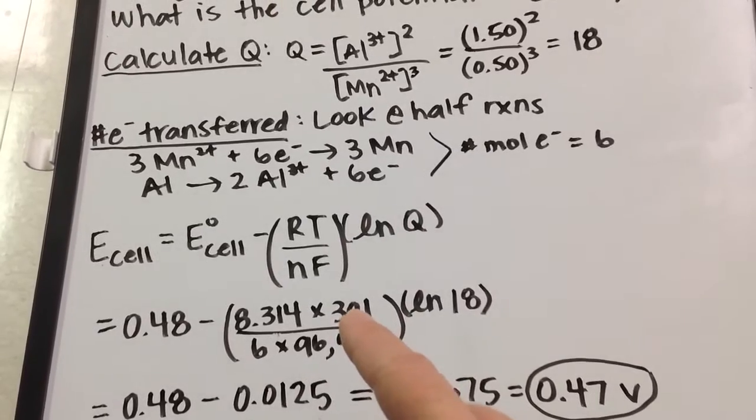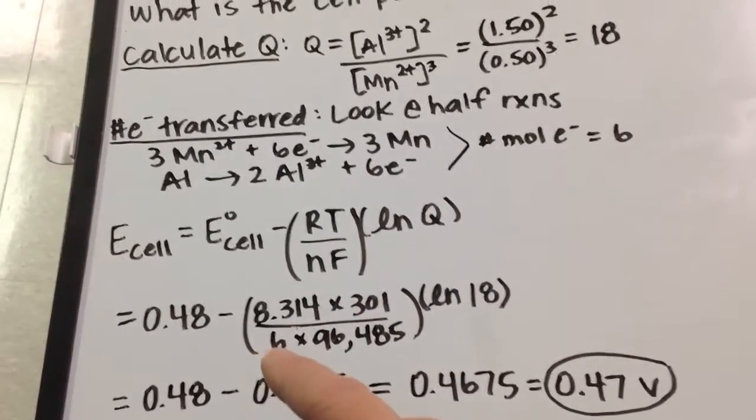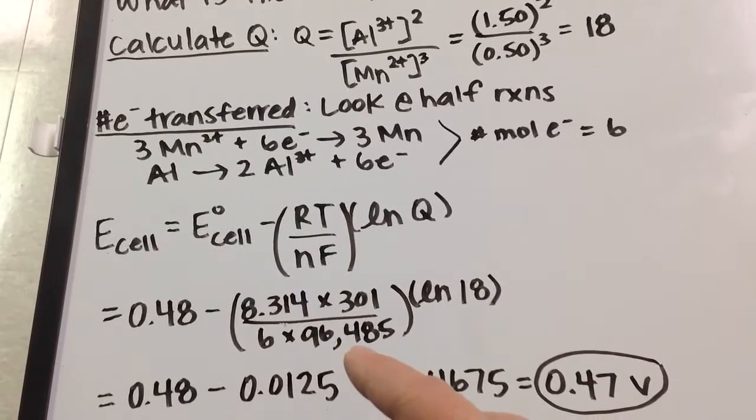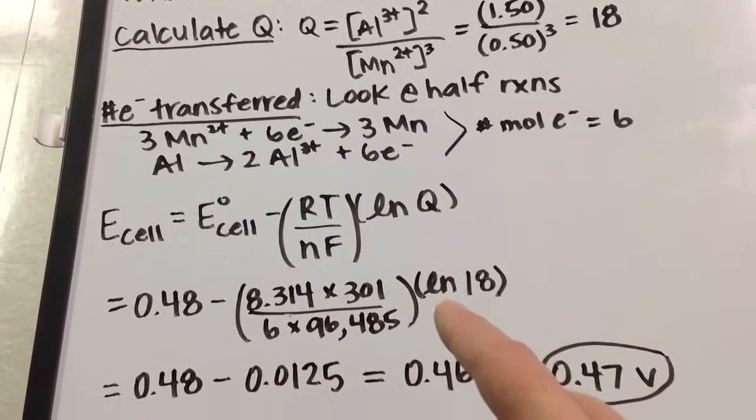so I take my Celsius temperature and add 273. 6 is the number of moles transferred, and Faraday's constant is 96,485. Then I take the natural log of 18.